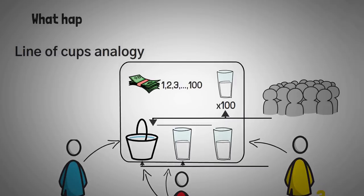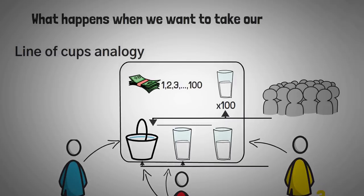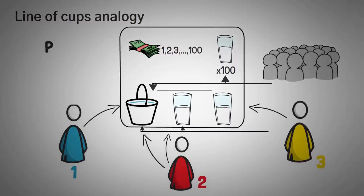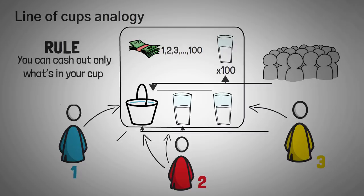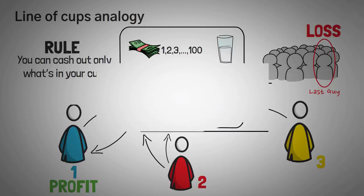Now, to finish this analogy, it's time to think about what happens when we want to take our money out. The rules in this cup analogy is that whatever your cup is, you can cash out only what's in your cup. So if the first guy cashes out, no matter what, I guarantee he's going to be loaded. The last guy though, sadly for him, technically 99% of his money is deposited in other people's cups. So he definitely isn't going to make any money unless he can get more people to invest in the cup game.